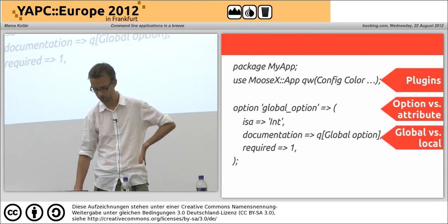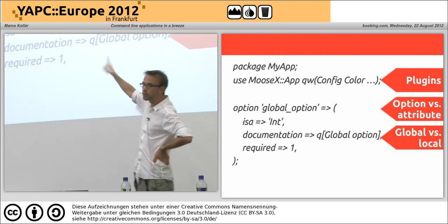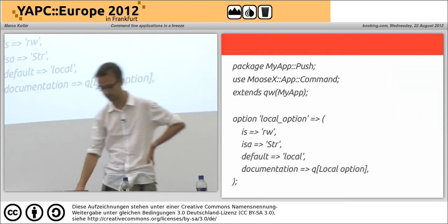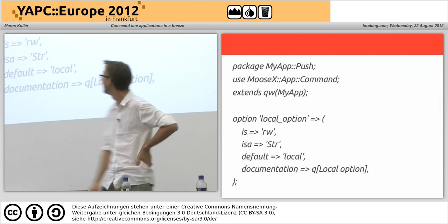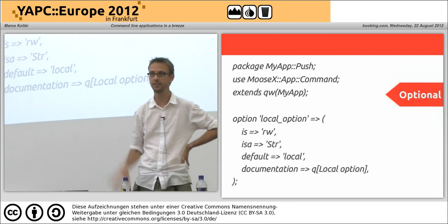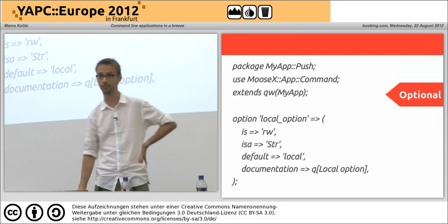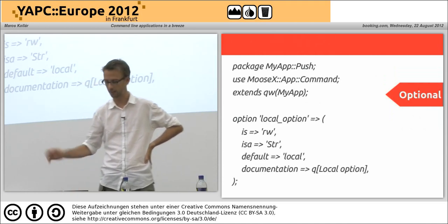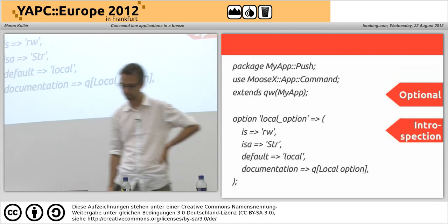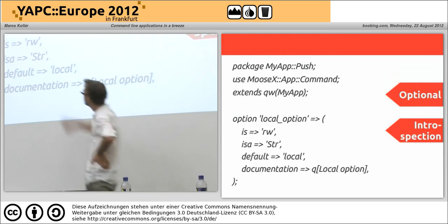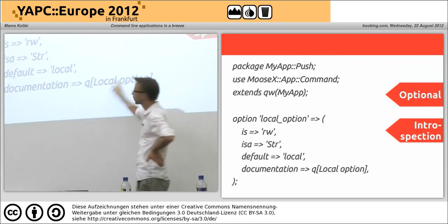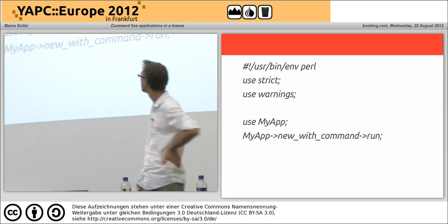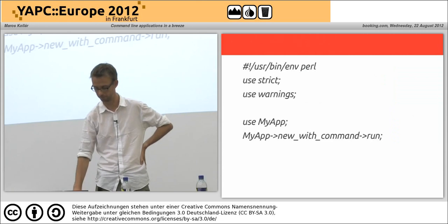It has plugins, options, and I've defined an option in my base class so it's a global attribute. A command class — also called 'push' — extends MyApp, but this is purely optional. You don't have to do that; in this case I wanted to reuse all the global attributes, but this can also be done with roles. It does quite a lot of introspection — it reads the default value, type constraints, and documentation, and presents them to the user asking for help. And the invocation script looks basically the same as MooseX::App::Cmd.